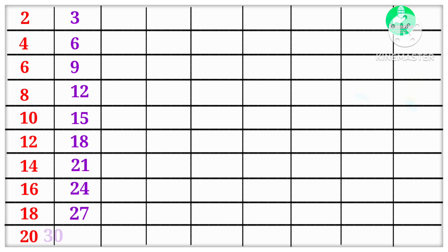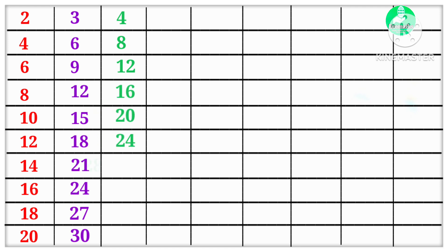3 10s are 30. 4 1s are 4, 4 2s are 8, 4 3s are 12, 4 4s are 16, 4 5s are 20, 4 6s are 24, 4 7s are 28, 4 8s are 32, 4 9s are 36.